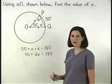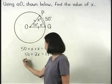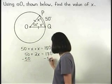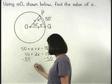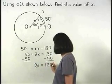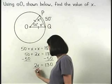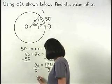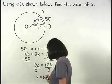Solving from here, we subtract 50 from both sides to get 2x equals 130. And dividing both sides by 2, we find that x equals 65.